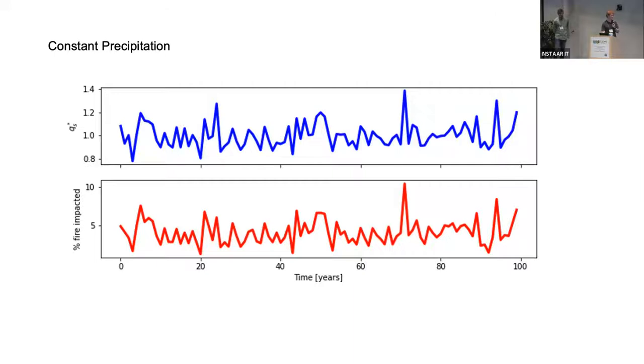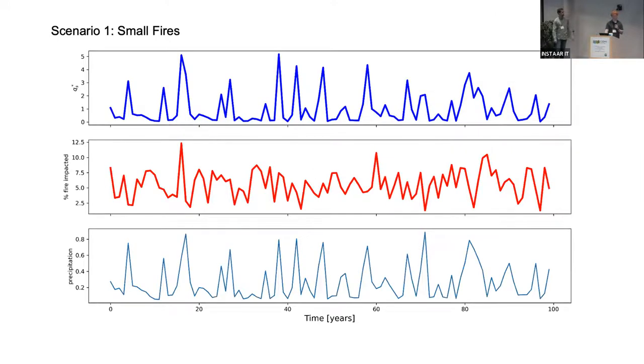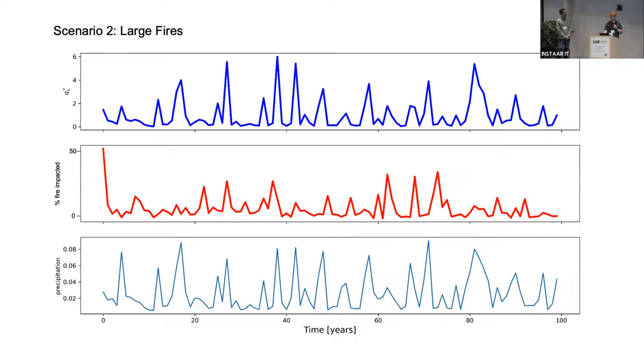So what does this look like with precipitation? This is it without precipitation. Fire is on the bottom, and you can see that sediment flux tracks pretty well with fire. Then when we add precipitation, we lose that effect a little bit because we see that precipitation is actually pretty important for the sediment flux. We kind of lose the effects of the fire, which was an interesting result. Here's the same thing with the larger fire. The middle plot, the percent of watershed impacted by fire goes up to like fifty percent. A similar result. We didn't do any statistical analysis, but I think it's pretty clear that a lot of the precipitation trends are reflected in the sediment flux, and the fire trends really aren't.